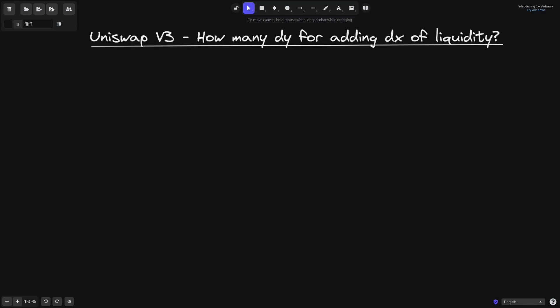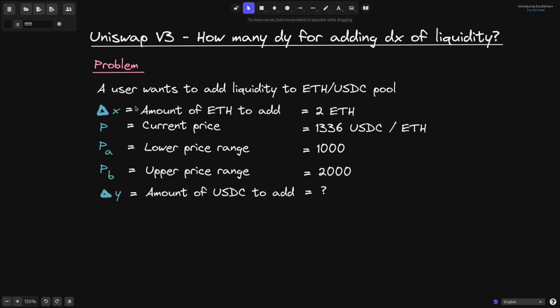Today we'll look at how to calculate the amount of tokens that you need when you're adding liquidity to Uniswap V3. Let's say that a user wants to add liquidity to an ETH/USDC pool. Delta X will represent the amount of ETH to add.